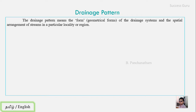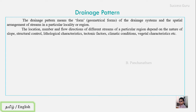Drainage pattern refers to the geometrical form of a drainage system — how it flows in form, shape, and direction. The location of rivers and the number and direction of streams are governed by controlling factors such as slope, structural controls like faults and folds, lithological characteristics like rock type (for example, limestone versus sandstone), and tectonic factors like uplift.